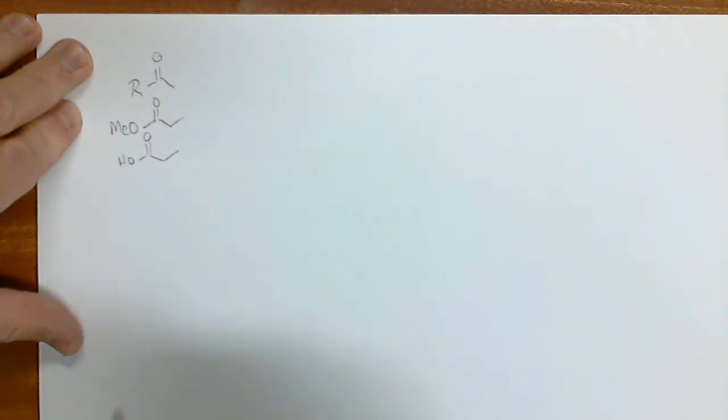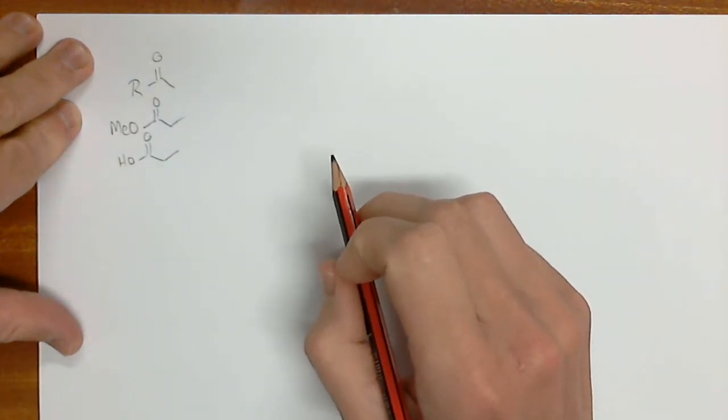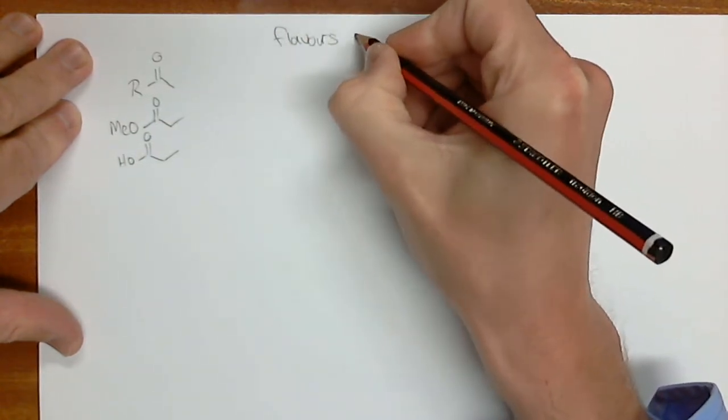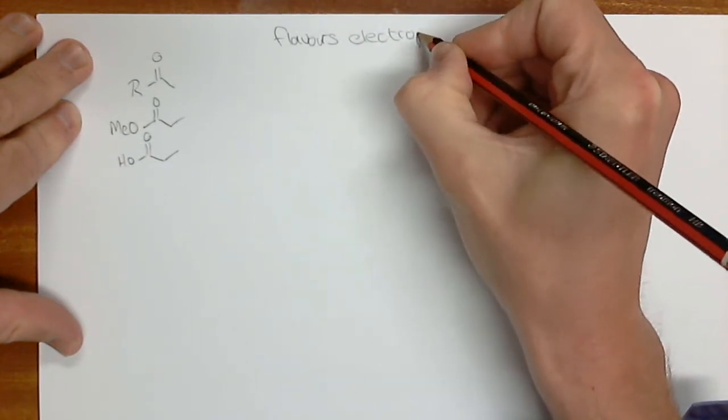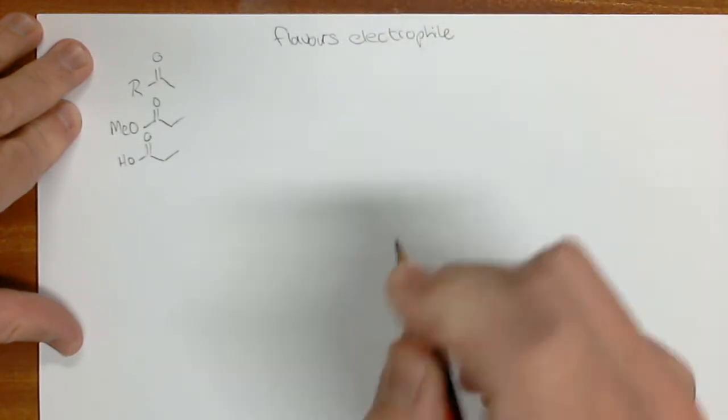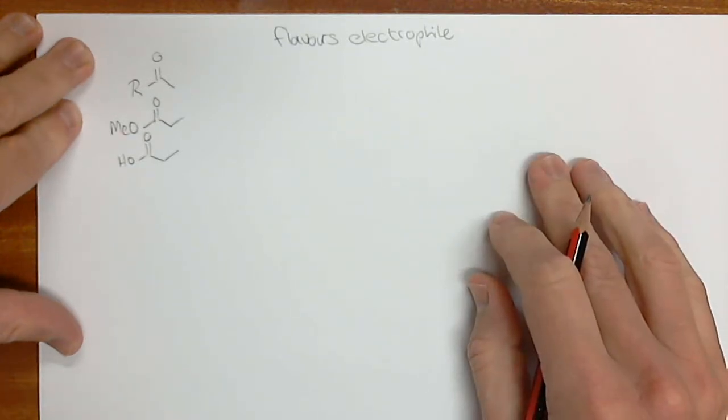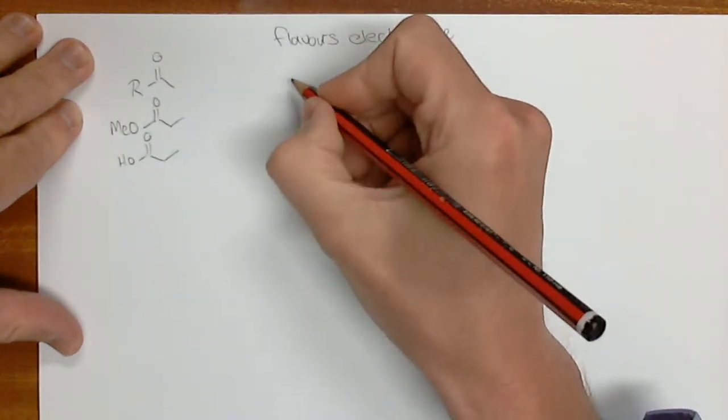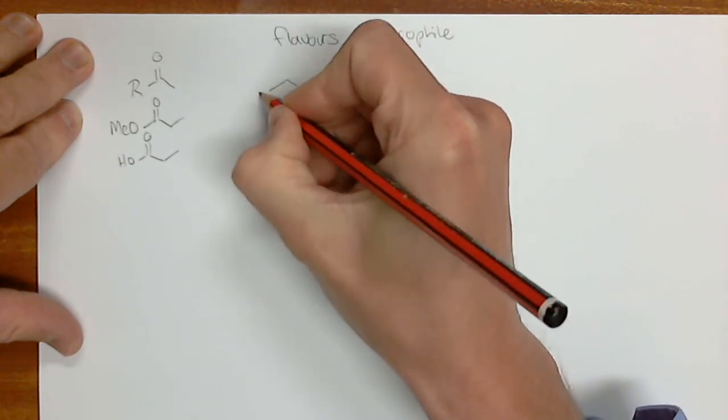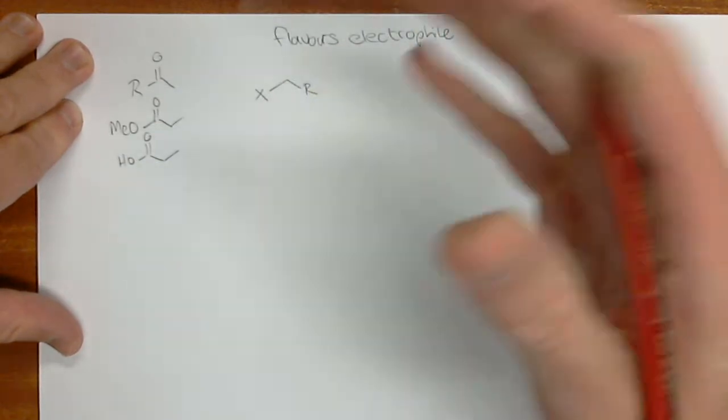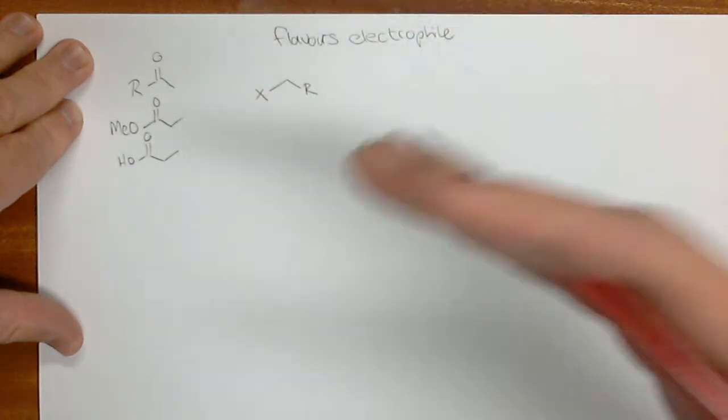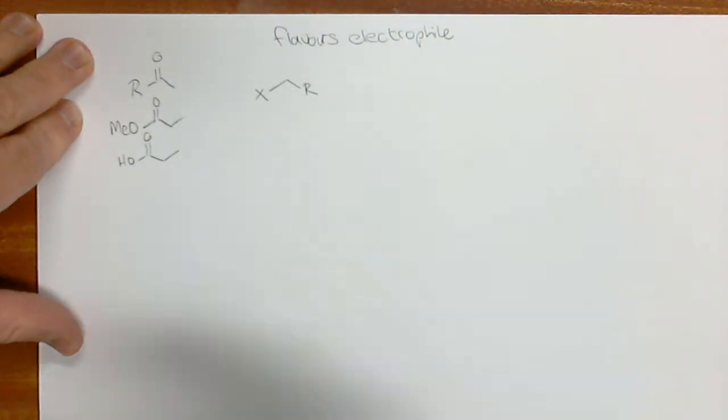But before I move on with the aldehyde, I want us to briefly get a feel for the flavors of the electrophile. Up until now, we've looked at just a few simple examples for alkylation of enolates. The electrophiles so far have looked like this: an R group, an alkyl group, with a leaving group attached to it. Bromine is a good one to choose.